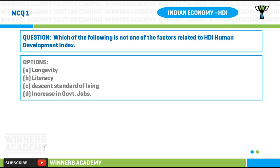Question number one: which of the following is not one of the factors related to the Human Development Index? Options: A) longevity, B) literacy, C) decent standard of living, D) increase in government jobs.